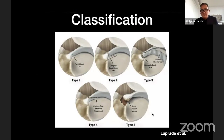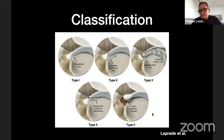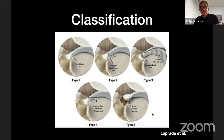LaPrade and colleagues proposed a classification for medial meniscus root tears. Type 1 is a partial root tear. Type 2, the most frequent in clinical assessment, is a complete radial root tear. Other types include root tear with bucket handle, oblique tear into root attachment, or a root avulsion fracture — which must absolutely be repaired.